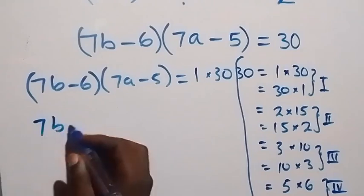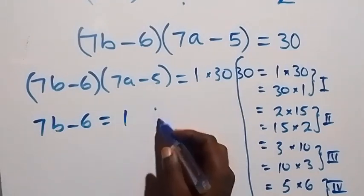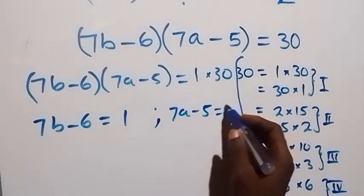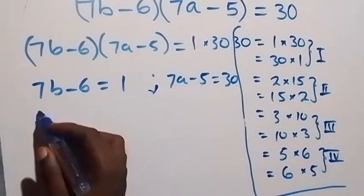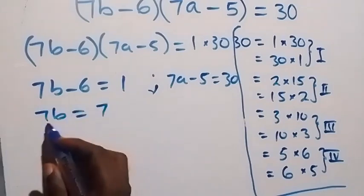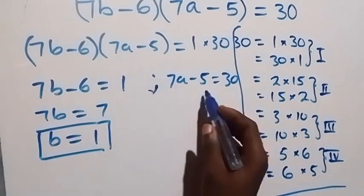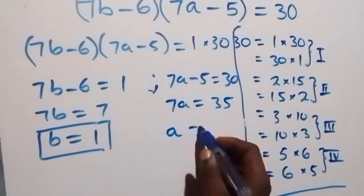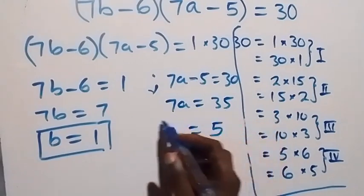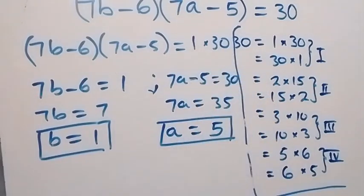We equate 7b minus 6 equals 1 and 7a minus 5 equals 30. Solving: 7b equals 7, so b equals 1. And 7a equals 35, so a equals 35 over 7, which equals 5. So we have b equals 1 and a equals 5.